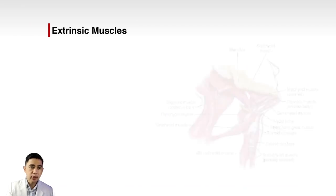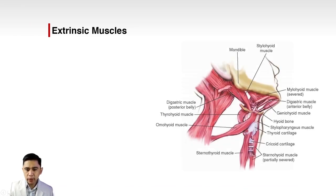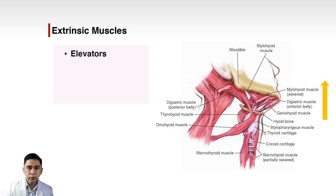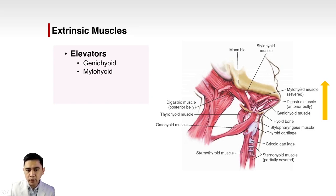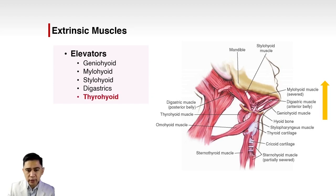Extrinsic muscles can be classified as elevators or depressors. Elevators move the laryngeal complex upward and include the geniohyoid, mylohyoid, stylohyoid, and digastric muscles. When the hyoid bone is elevated by any muscle, the laryngeal complex is also elevated. The thyrohyoid muscle connects the thyroid cartilage and the hyoid bone; when it contracts, it elevates the laryngeal complex.